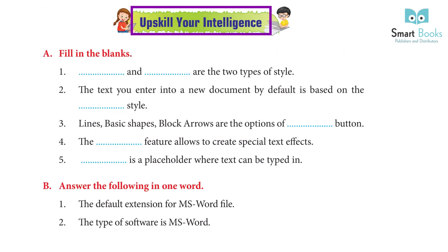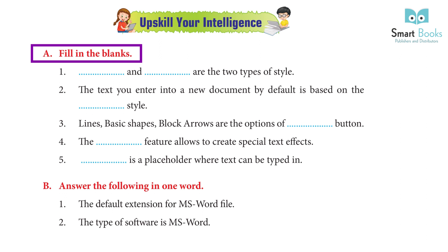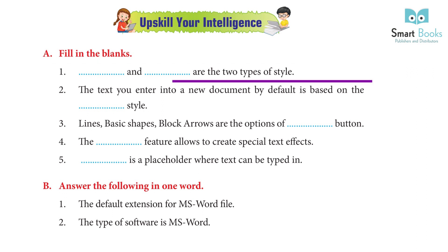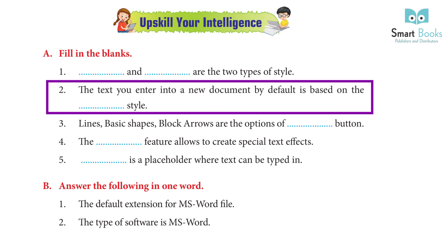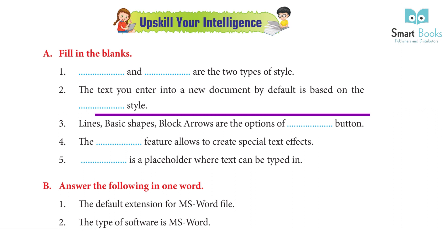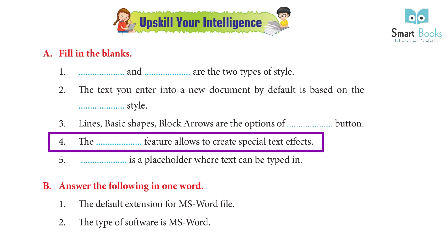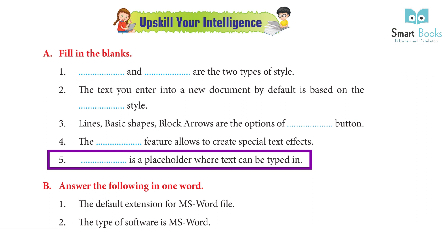Upskill your intelligence. A: Fill in the blanks. 1. Character and paragraph are the two ways to style. 2. The text you enter into a new document by default is based on the text style. 3. Line, basic shape, and block arrows are options of the Shapes button found under the Insert tab. 4. The Word Art feature allows you to create special text effects. 5. A text box is a placeholder where text can be typed in.